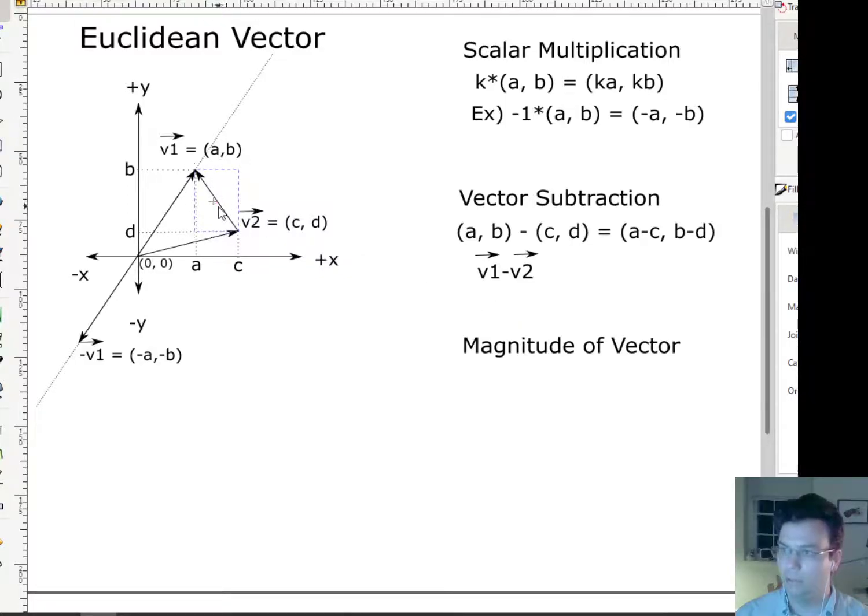Now, of course, all vectors start at the origin. So I'm just going to slide that down here. So this is really the vector I'm looking at. So this is v1 - v2. Okay, now what about v2 - v1?